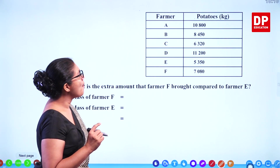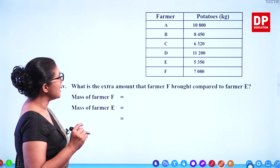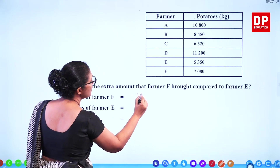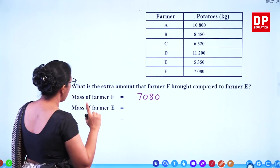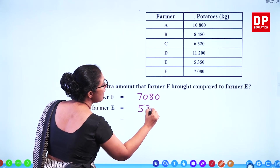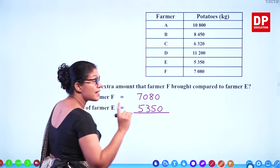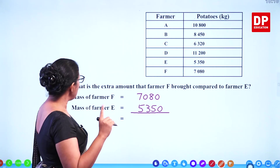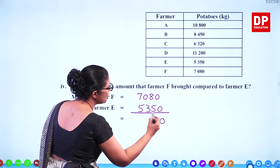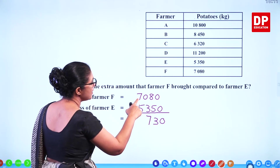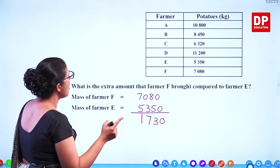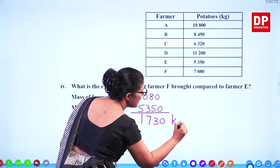What is the extra amount that farmer F brought compared to farmer E? Farmer F has 7,080 kg and farmer E has 5,350 kg. Subtracting: 0, 8 minus 5 is 3, 10 minus 3 is 7 carry 1, 6 minus 5 is 1. So the extra amount is 1,730 kilograms.